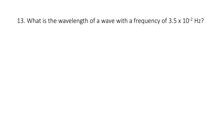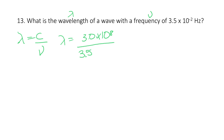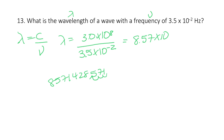What is the wavelength of a wave with a frequency of 3.5 × 10⁻² Hertz? Wavelength is C divided by frequency: λ = 3.0 × 10⁸ divided by 3.5 × 10⁻². In the calculator: 3 EE 8 divided by 3.5 EE negative 2. I get 857,142,857.1, which in scientific notation is 8.57 × 10⁹ meters. Remember, wavelength is in meters.